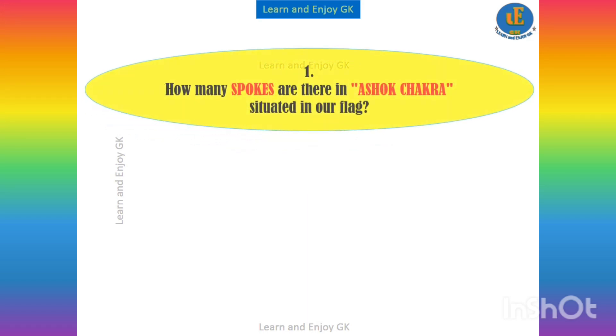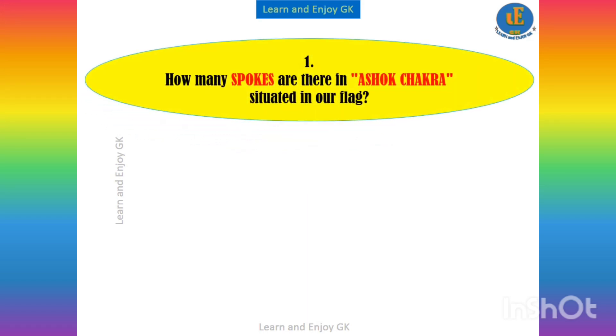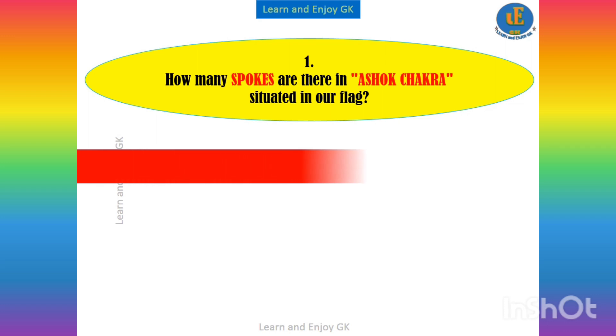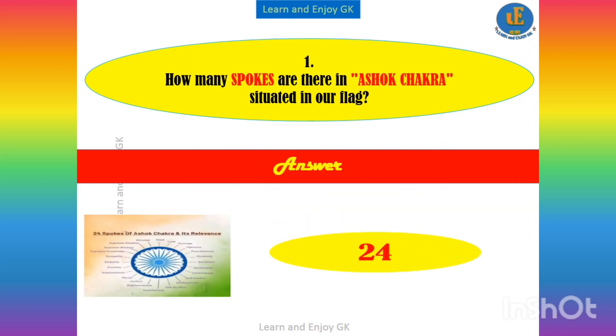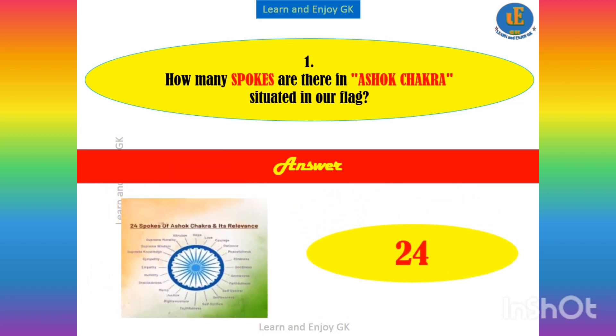How many spokes are there in Ashok Chakra situated in our flag? Answer: 24.